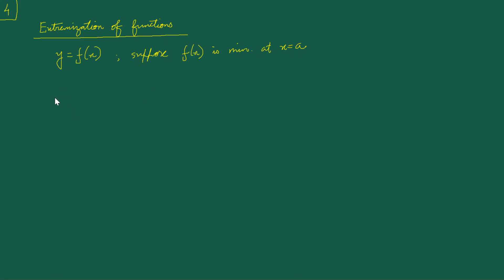What is the basic motivation behind the algorithm of saying f'(x) = 0 at x = a, and f''(x) > 0 at x = a for f(x) to be minimum at x = a? We know what to do algorithmically, but what is the motivation behind that method? To understand that, we are going to Taylor expand f(x) about the point of concern, x = a.